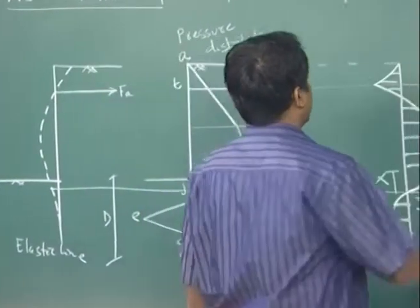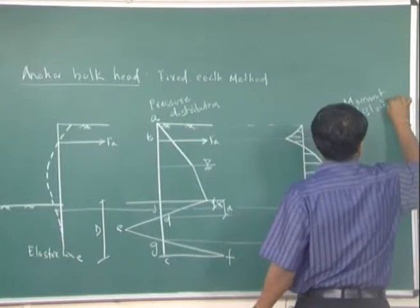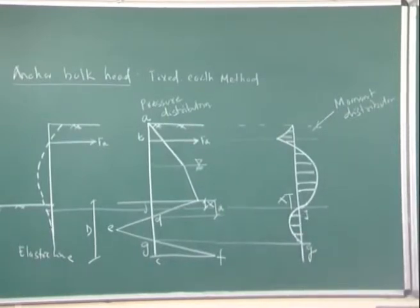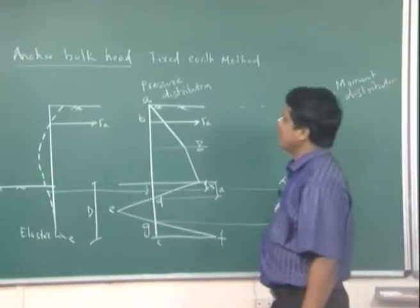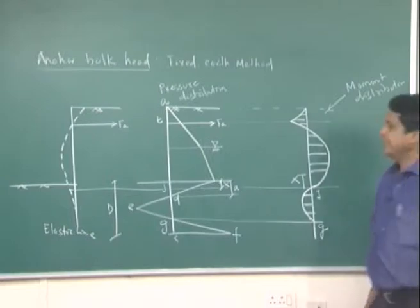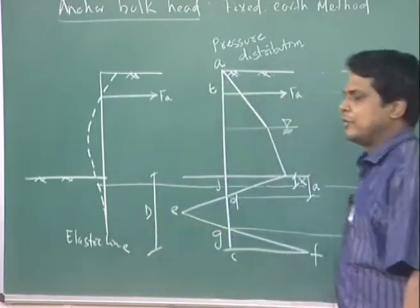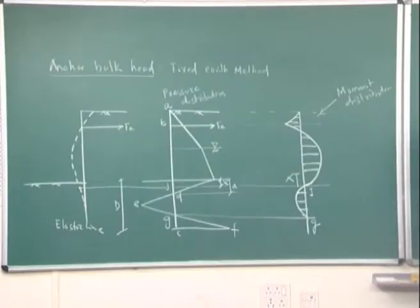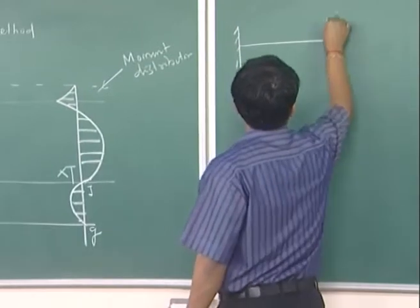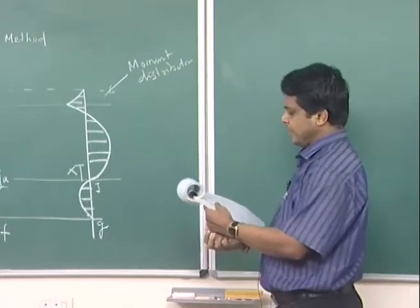This is your moment distribution diagram. Fixed earth method means this bulkhead — particularly if you see this anchor wall below the dredge line — it has been pushed to a certain depth so that it will be fixed. It will not rotate below the dredge line. Once it is fixed, it will be considered as a propped cantilever.